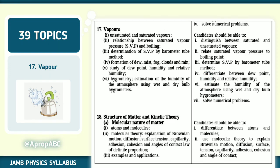Number 17, we have vapors. Unsaturated and saturated vapors. Relationship between saturated vapor pressure (SVP) and boiling. Determination of SVP by barometer. Hygrometer. Note them very well. Dew point, humidity, relative humidity. Be able to solve numerical problems on them.